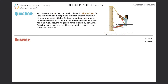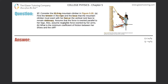Number 17: consider the 52 kilogram mountain climber in figure 5.20. Letter A: find the tension in the rope and the force that the mountain climber must exert with her feet on the vertical rock face to remain stationary. Assume that the force is exerted parallel to her legs, and assume negligible force exerted by her arms. I've created a simple coordinate system with the axis set up, and I'm going to talk about the center point of her mass and detail all the forces around this particular point.